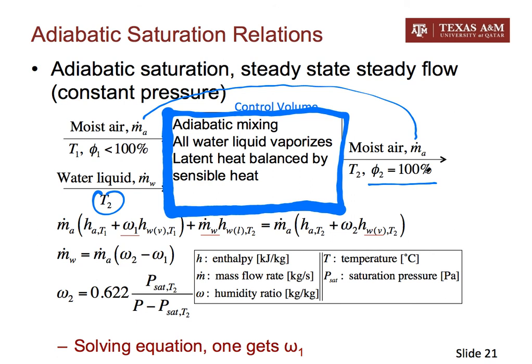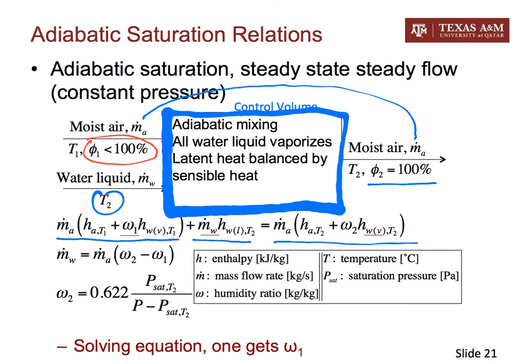Now we can set up an energy balance equation for this adiabatic saturation process. We have two incoming streams of energy and one outgoing stream of energy. Based on the first law of thermodynamics, these two quantities on each side of the equation must be equal. We know T₁ (incoming dry bulb temperature) and T₂ (outgoing dry bulb temperature). By design, the liquid water entering the control volume is also at T₂, and φ₂ is 100% — all known quantities. What we do not know is the initial relative humidity of the incoming moist air, φ₁, which is what we want to calculate.